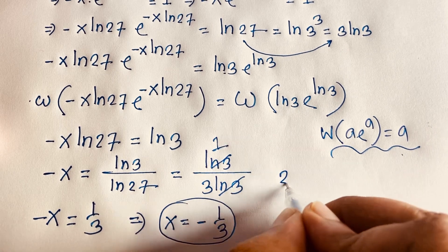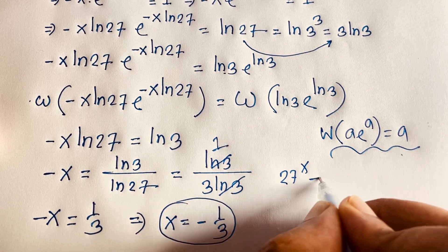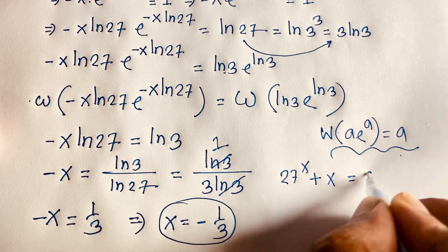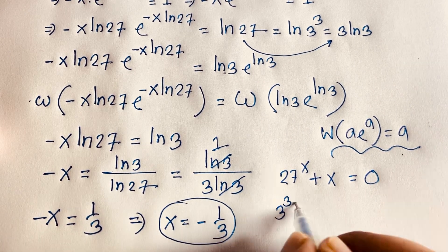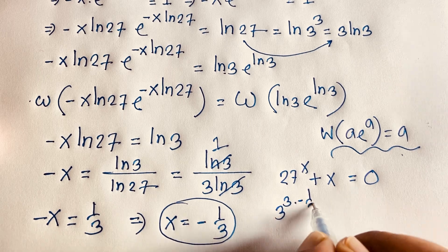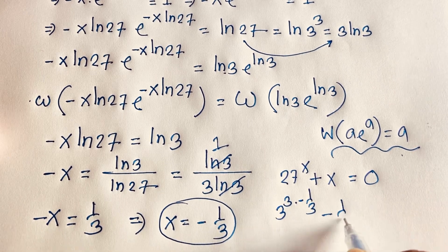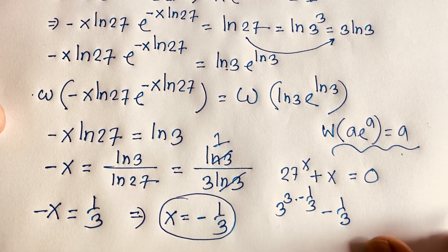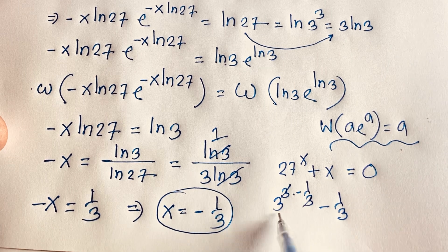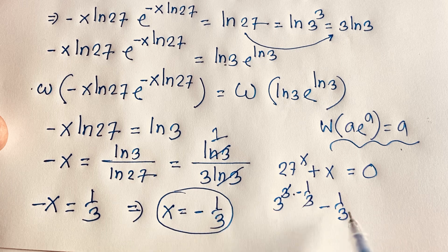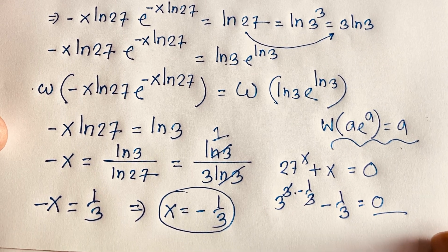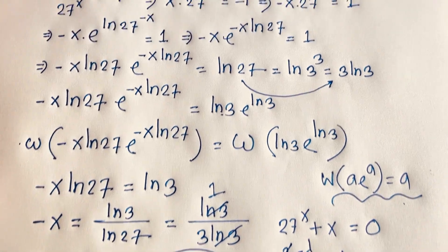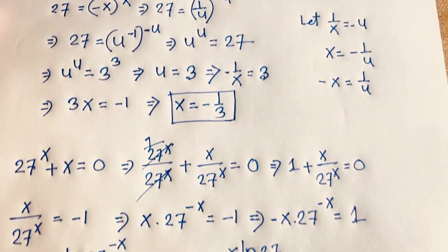Let me verify: our question is 27^x plus x equals 0. With x equals minus 1/3, we get 27^(minus 1/3) minus 1/3. Since 27 equals 3^3, we have (3^3)^(minus 1/3) equals 3^(minus 1) equals 1/3. So 1/3 minus 1/3 equals 0. Correct! Thank you all. If you enjoyed this video, please subscribe to my channel for other interesting videos. Goodbye, take care.